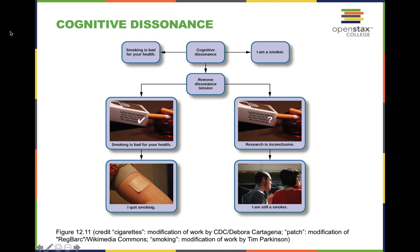To alleviate the mental discomfort of cognitive dissonance, you either change the behavior — stopping smoking, drinking, or drug use — or change the belief about the substance, telling yourself it helps you perform better or be more productive. That defense mechanism is called rationalization, which was covered in Chapter 11 on Personality.